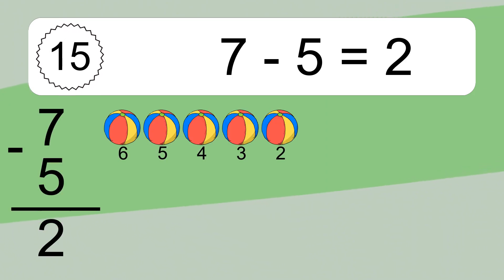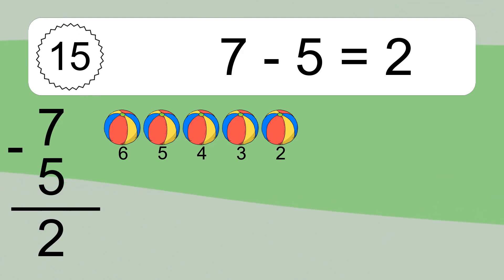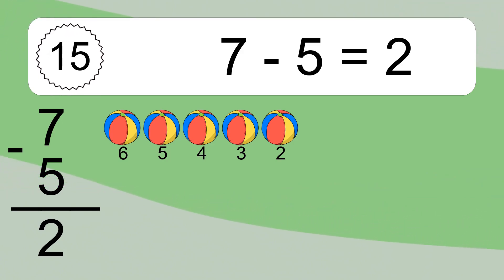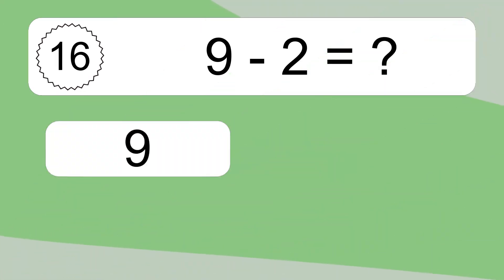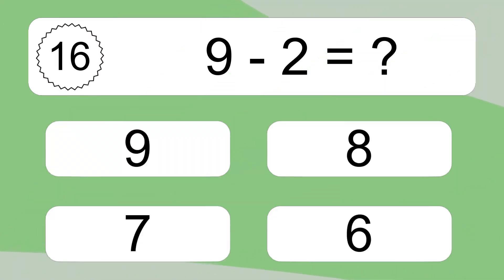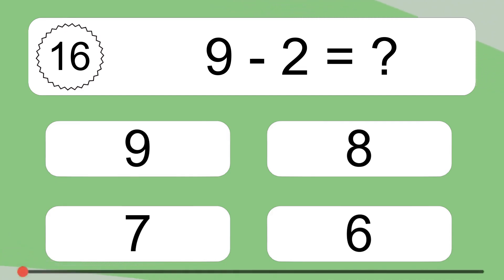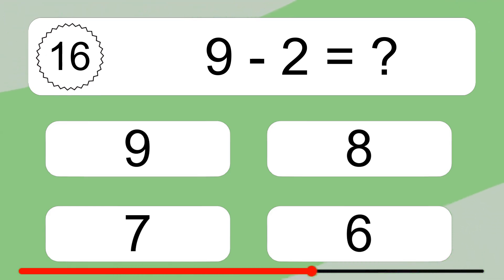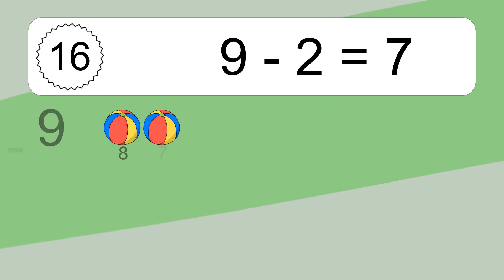7 minus 5 equals what? 7 minus 5 equals 2. Let's count it: 6, 5, 4, 3, 2.